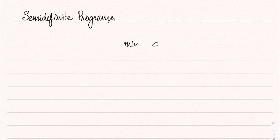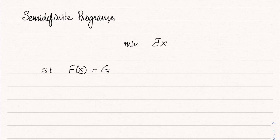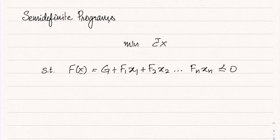We now look at semi-definite programs. The standard form for a semi-definite program is: minimize c transpose x, subject to a matrix constraint. The constraint is that f of x — a matrix function which takes a vector input and outputs a matrix — equals g plus f1 x1 plus f2 x2 all the way till fn xn, which is negative semi-definite, plus other constraints like Ax equal to b.